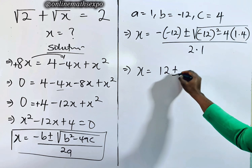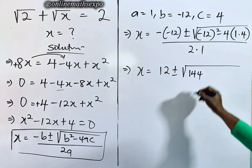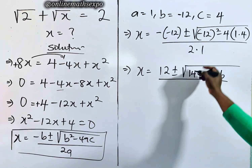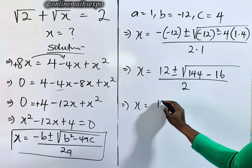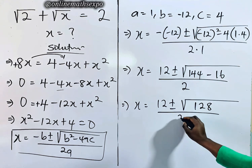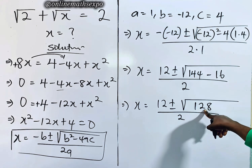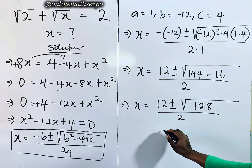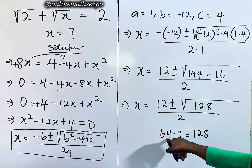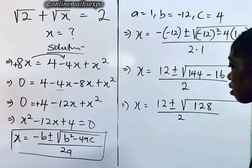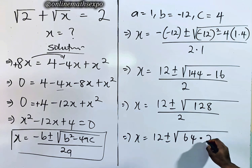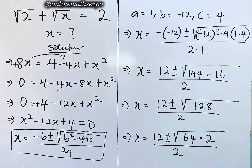Keep solving: x = (12 ± √(144 − 16)) / 2, which gives x = (12 ± √128) / 2. Now we know that 128 has a perfect square factor: 64 times 2 equals 128, and 64 is a perfect square. So we write x = (12 ± √(64 × 2)) / 2.